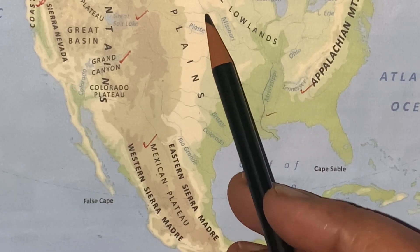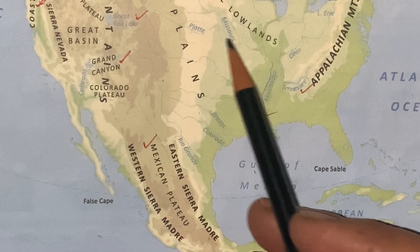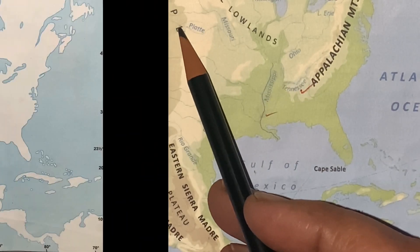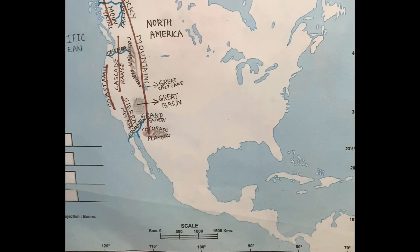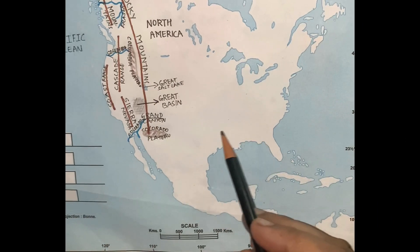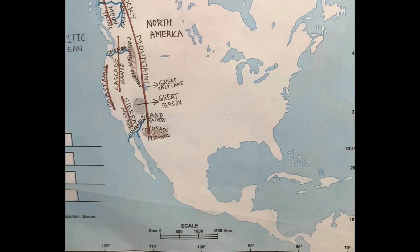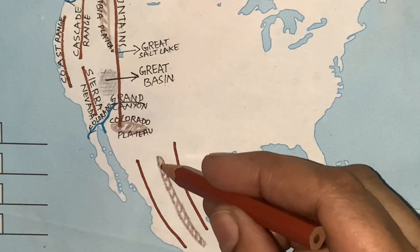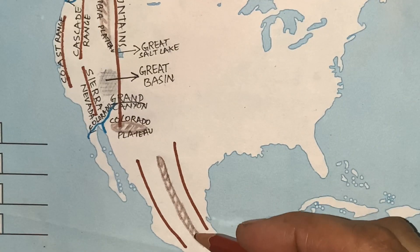Then you will notice the River Mississippi and its tributaries — River Ohio, River Tennessee, River Missouri, as well as River Plateau. Now we will learn to mark all these points on an empty outline map of North America.